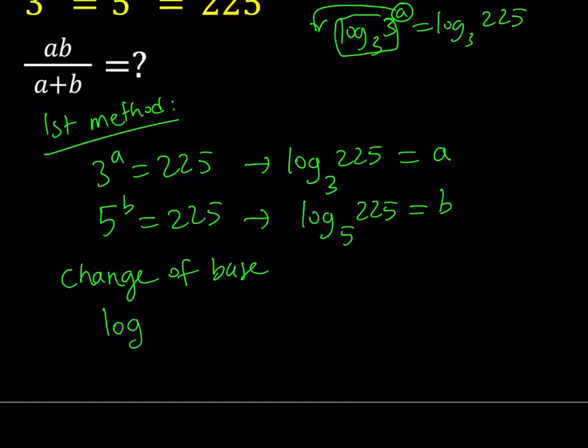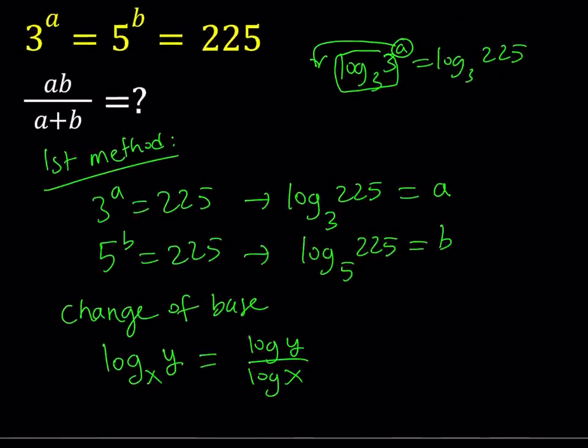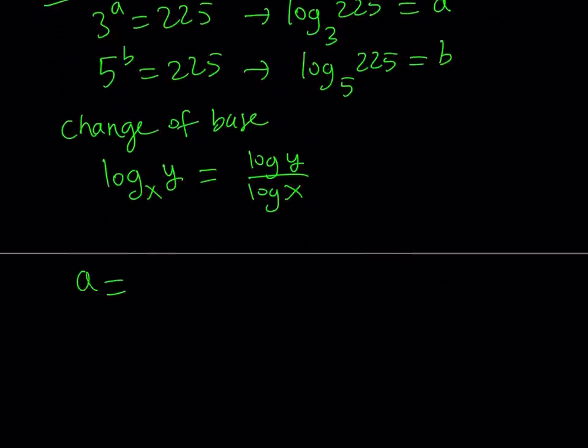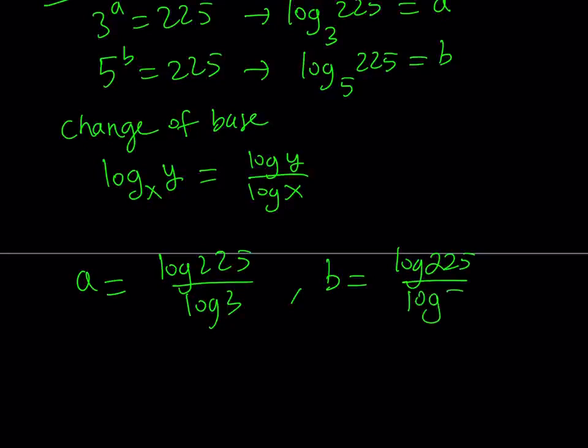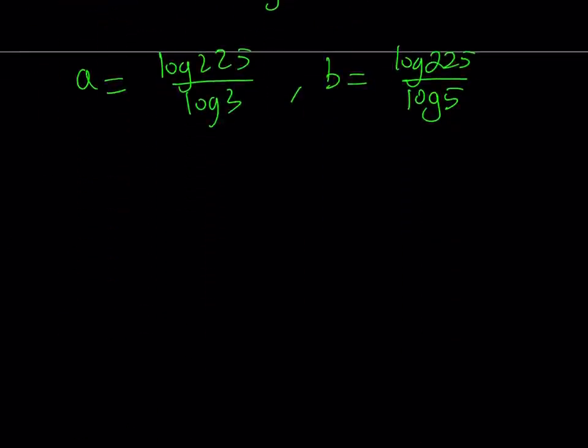If you have log y with base x, you can basically write it as log y over log x. Here, you can choose any base, but a lot of times we use either e or 10 as our base. So I'm going to take this expression and write the a as log 225 over log 3. And I'm going to write the b as log 225 over log 5. Here, I use base 10 because it's convenient. Now, I'm going to go ahead and substitute all of this into my expression, which is ab over a plus b. Let's go ahead and plug it in.